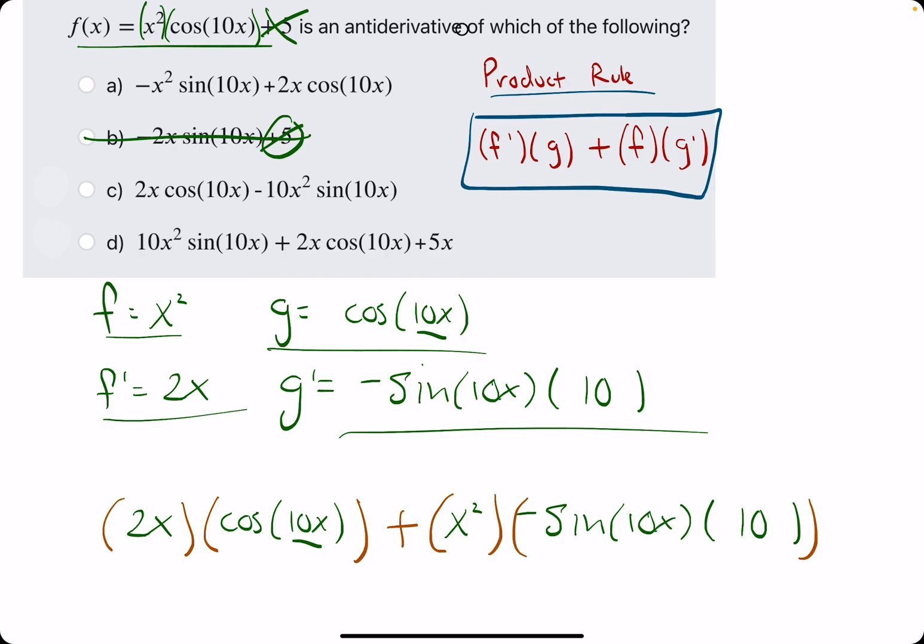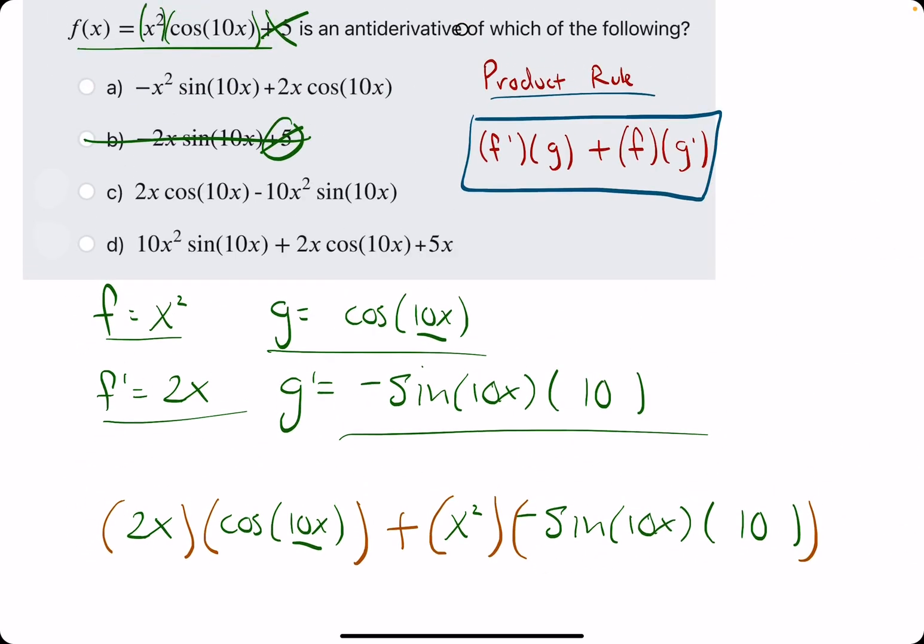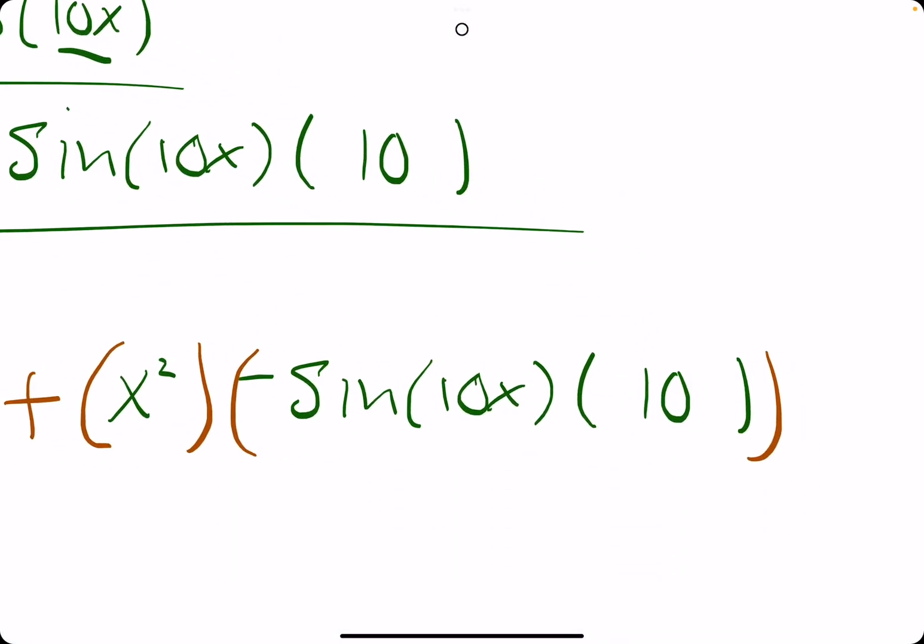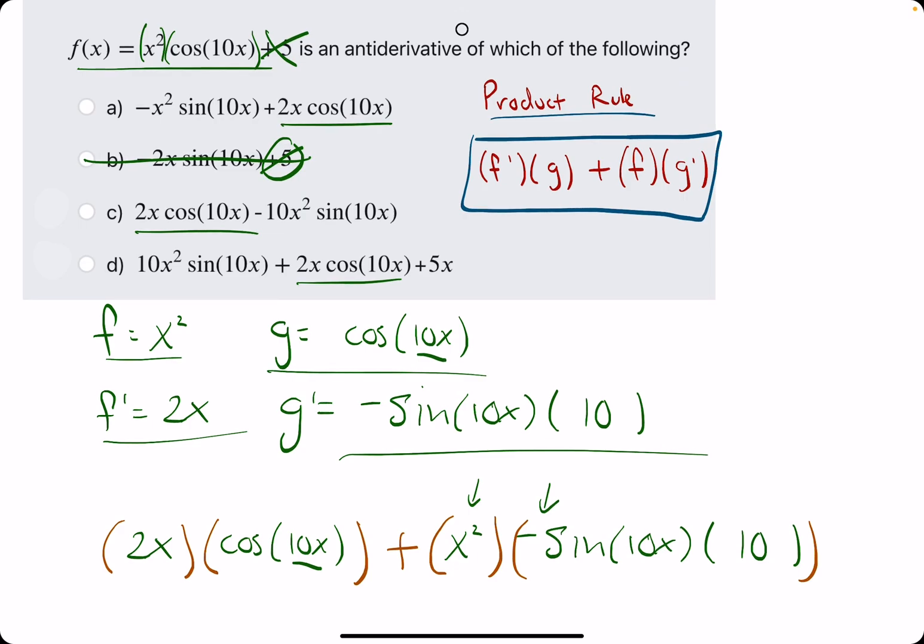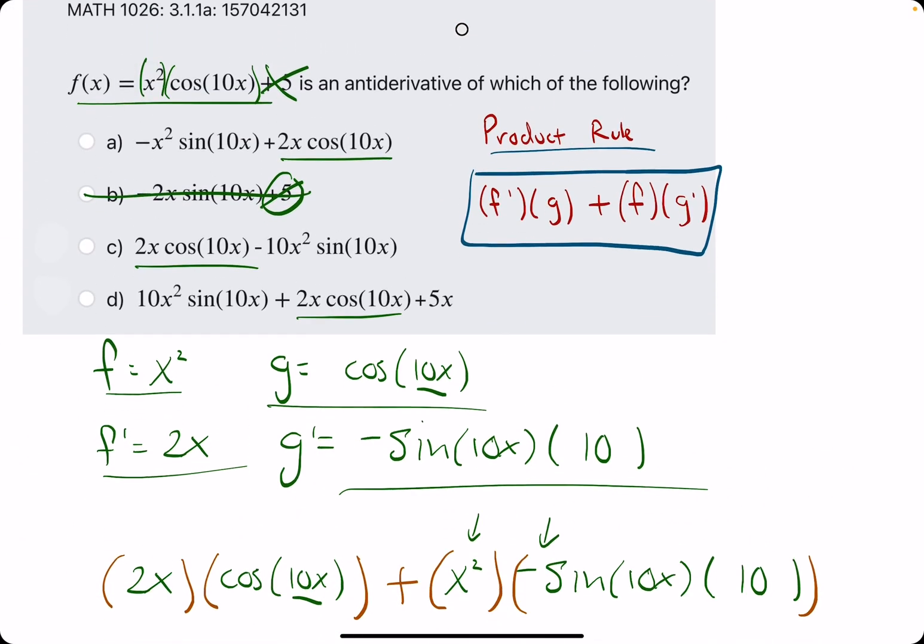Now we're just basically picking the answer that matches what we have here. We're looking for a 2x paired with a cosine of 10x. Do we see that? We see that here. We see that here. And we see that here. We're looking for a 10 with an x squared and a negative sine of 10x. We're looking for all these terms bunched up together. The negative is probably a very telling piece.